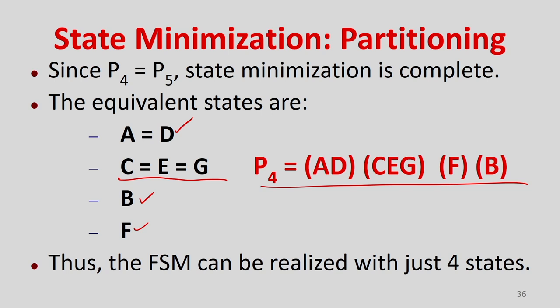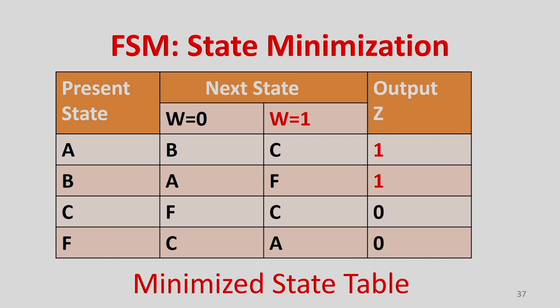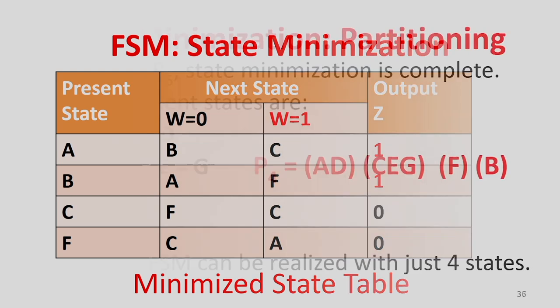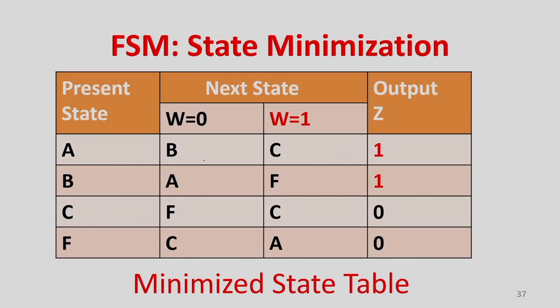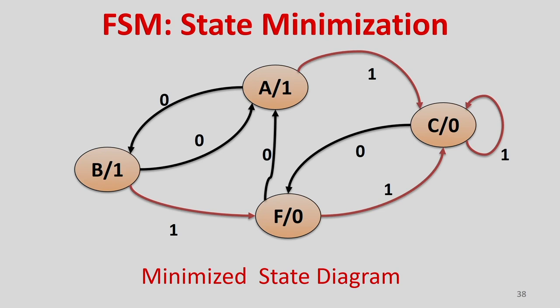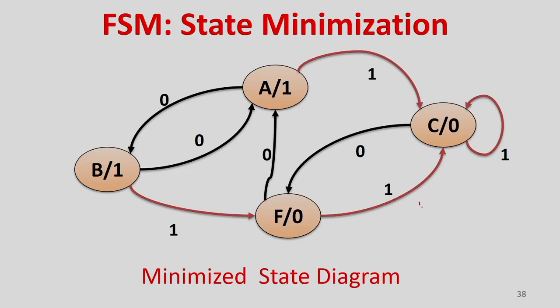From this partitioning-based method, we can argue it is easy to manage with only 4 states. Earlier it was 7 states; now reduced to 4. The minimized table has states A, B, C, and F (where D is merged with A, E and G merged with C). This is the minimized table and the minimized state diagram in graphical form.